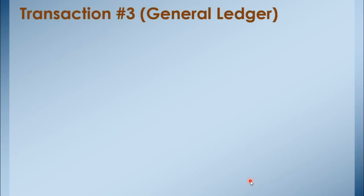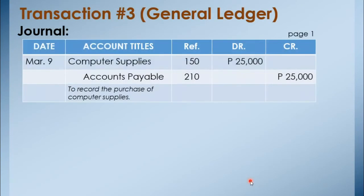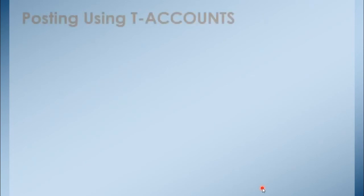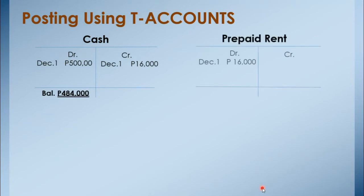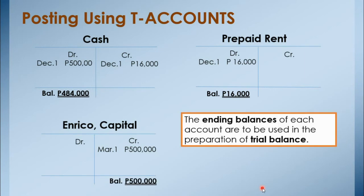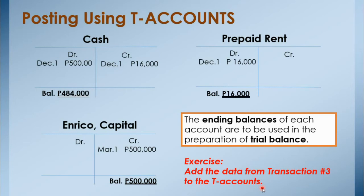Now for transaction number 3, it's your turn to try posting journal entries to the ledger. You may pause this video on this part so you can try answering. There is also a simpler but less formal way of posting — through the use of T-accounts. We simply draw a letter T. At the top is the account title; on the left side is debit and on the right side is credit. The date is always there, but the reference and item are omitted. The ending balances are computed the same way as the previous. The ending balances of each account are to be used in the preparation of the trial balance. I'll give you the opportunity to try working on transaction number 3 using these T-accounts. You may pause this video on this part so you can try answering.